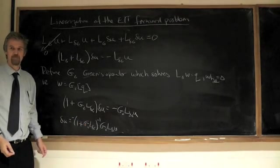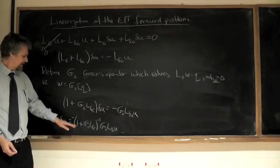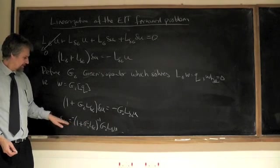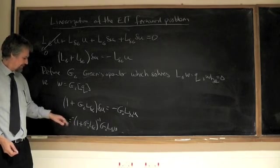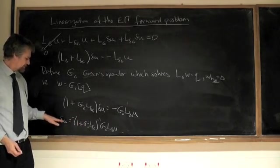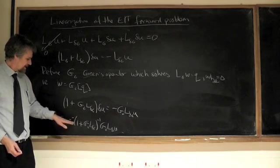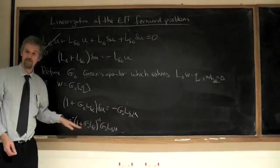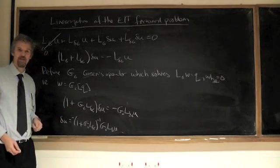He has an inverse, and then, you know, this formula, if that inverse exists, completely describes delta u and the way it changes with delta sigma. Delta sigma on this side, delta u's on that side.